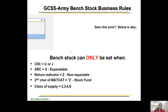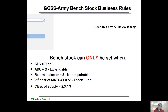A few rules about bench stock — have you ever seen the error that says this does not meet the criteria as bench stock? Bench stock can only be set when these conditions are met: a CIC code of U or J, the ARC is X for expendable, the return indicator is non-repairable, and the MACAT second character is 2 (stock funded). These are your classes of supply 2, 3, 4, and 9.